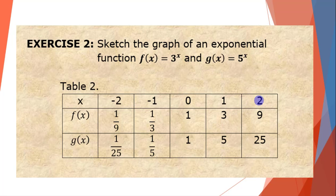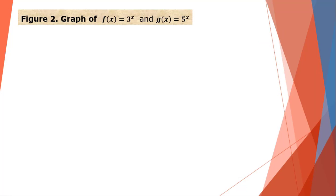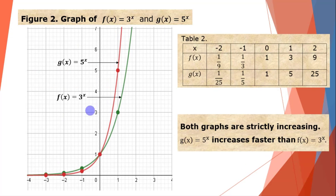f(2) = 3² = 9. For g(x) = 5 raised to x: g(−2) = 1/5² = 1/25. g(−1) = 1/5. g(0) = 1. g(1) = 5. And g(2) = 5² = 25. These are the table of values for the two functions. Now we graph them.